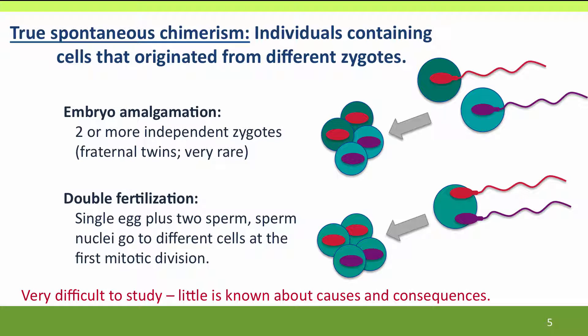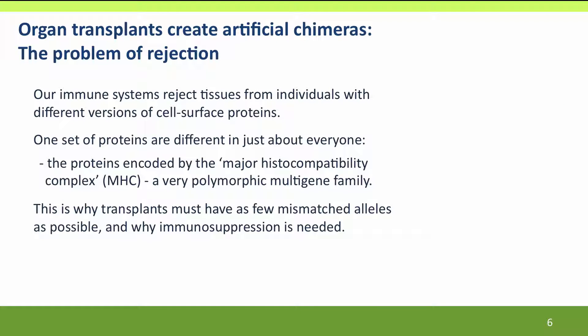These true chimeras are very difficult to study. Very little is known about them because so few people exhibit the phenotype of having two different genotypes in different cells in their body. We know a lot more about artificial chimeras that we create ourselves. In humans, by far the most common kind are chimeras created by organ transplants. Even a blood transfusion can be considered as temporarily creating a chimera, and any kind of tissue transplant — a heart transplant, kidney transplants — deliberately creates chimeras.